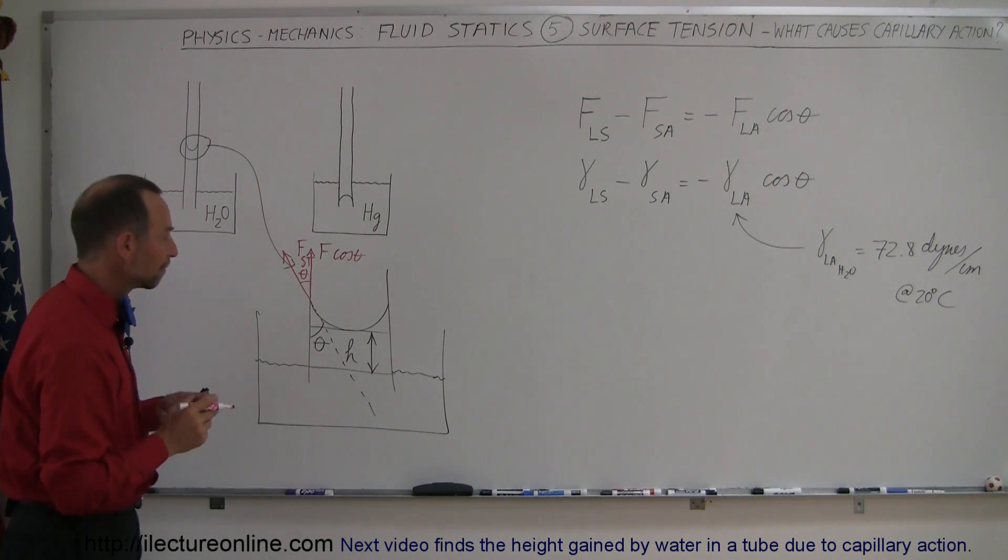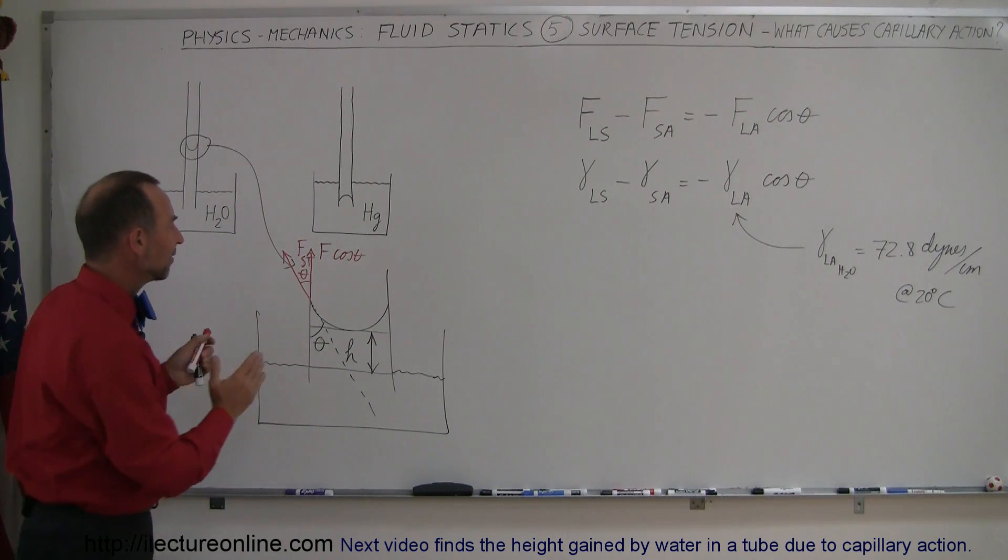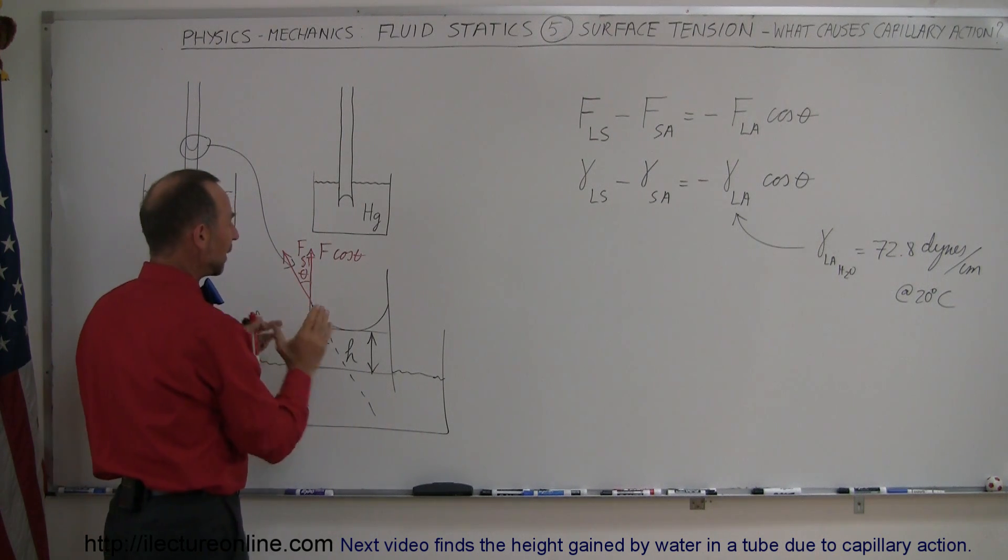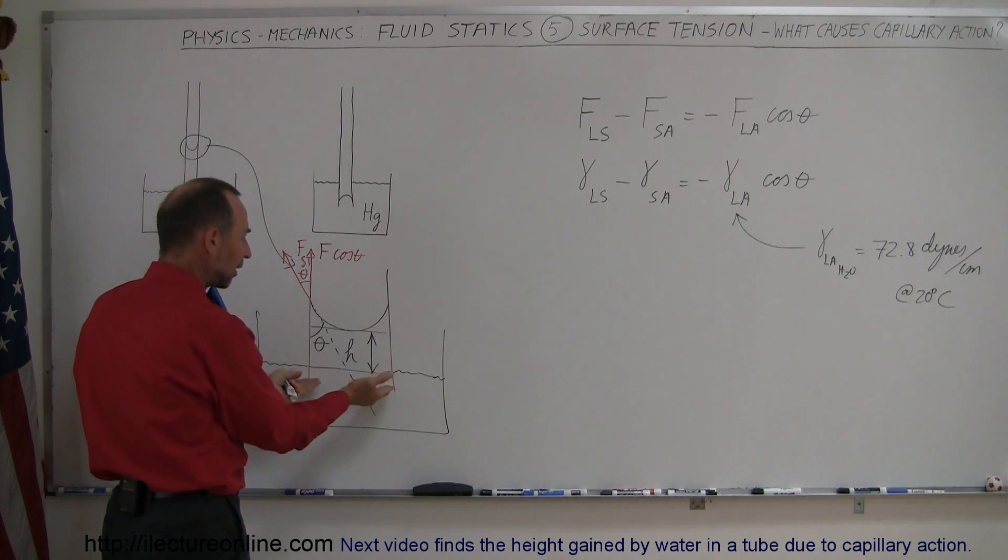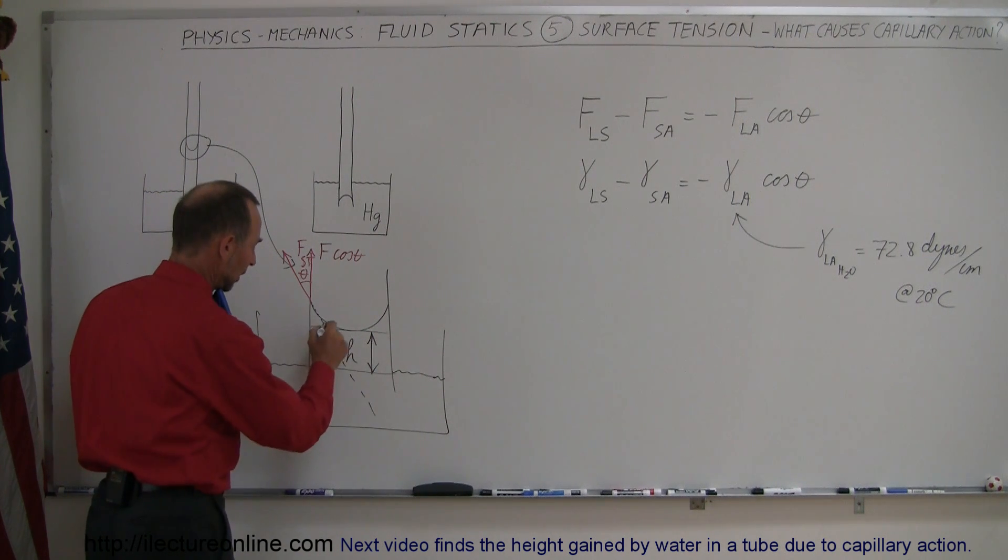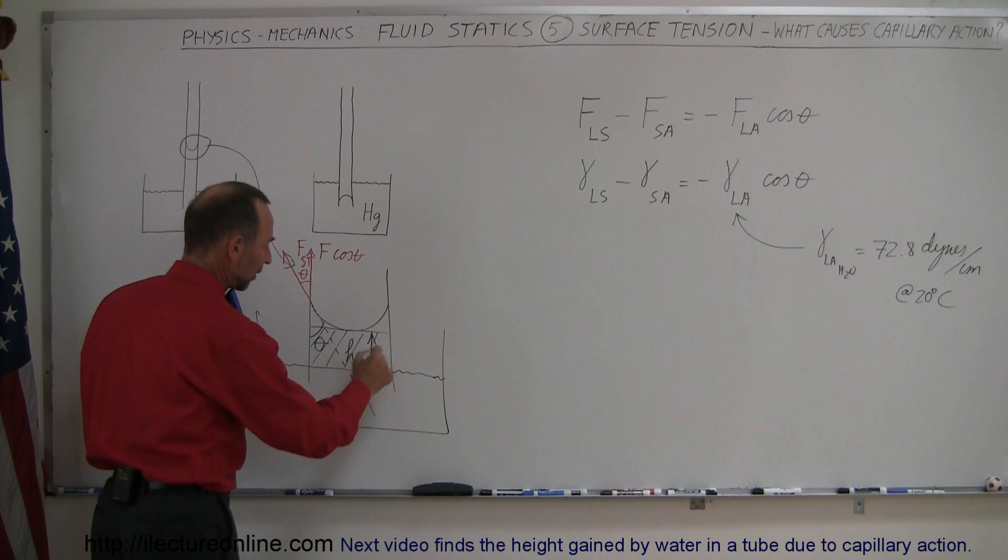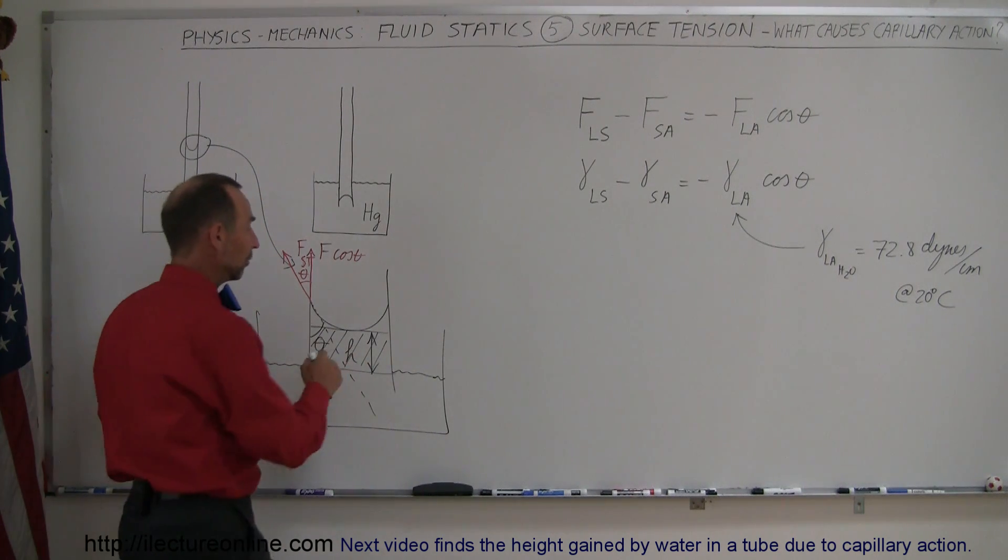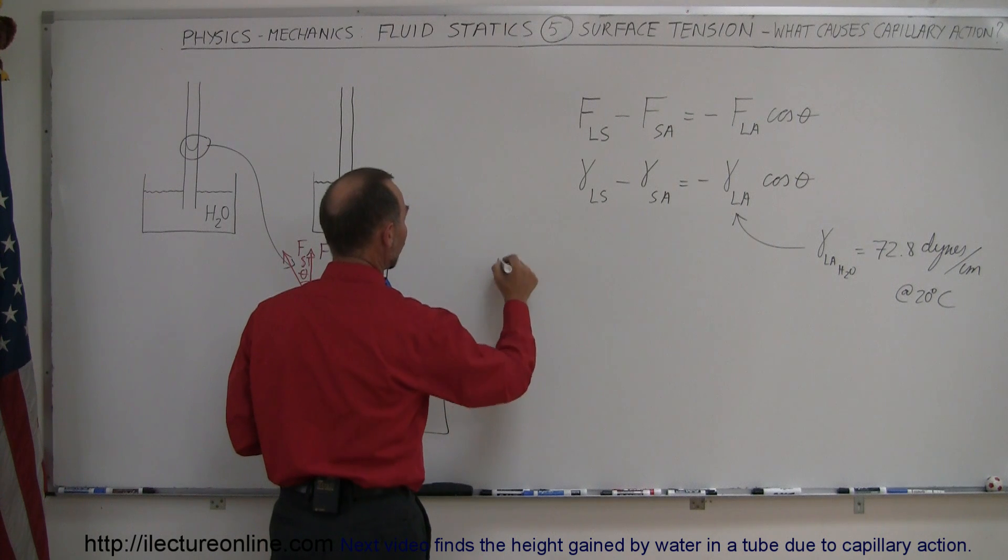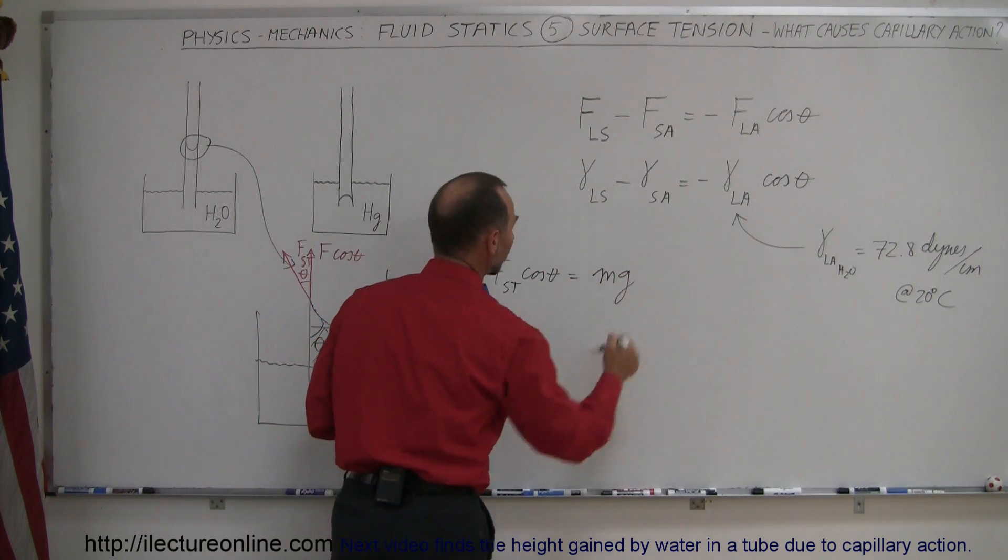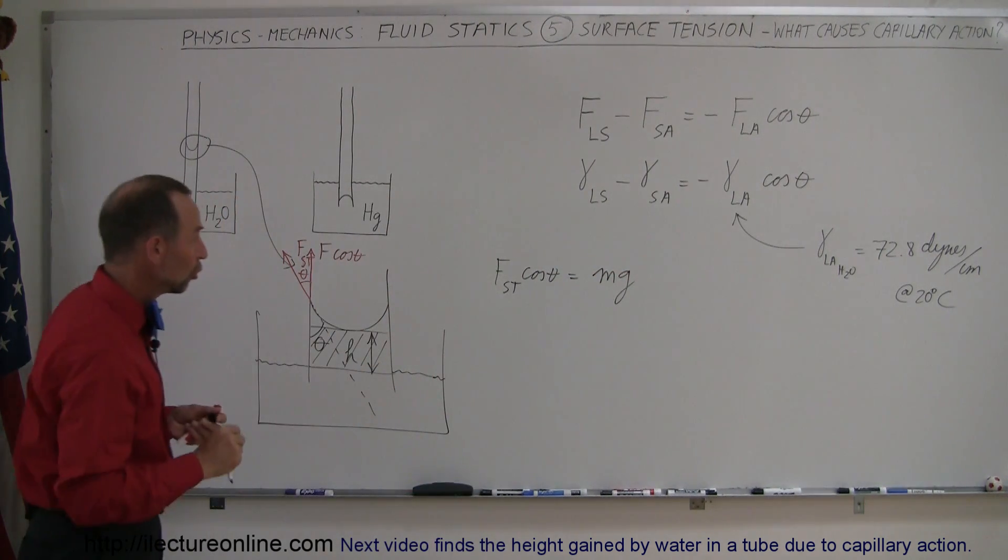What that means, then, is that this component of the surface tension then is counterbalanced by the weight of the additional water that's being pulled above the level of the water right here. So this here is a certain amount of mass of water that you have, and that then contains a certain weight of water. And so what we can then say is that the force of the surface tension times the cosine of the angle must equal to the extra weight of the water that then gets pulled up into the tube.